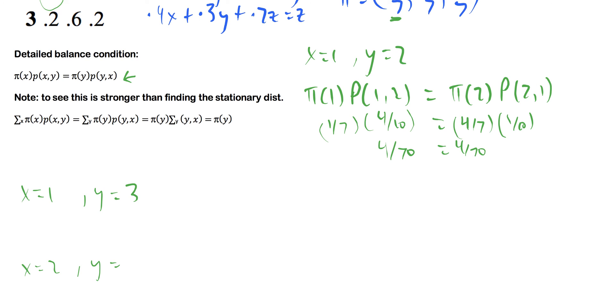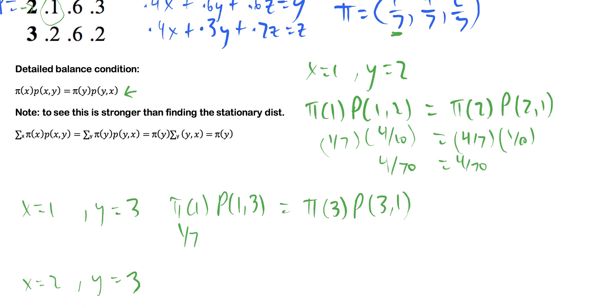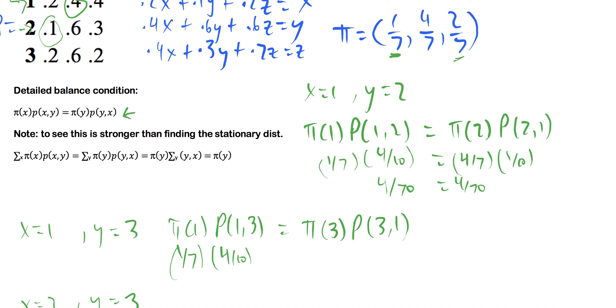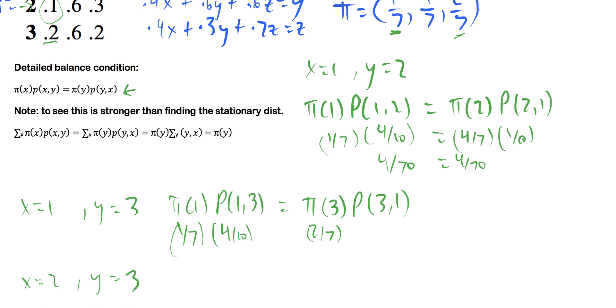So for when x is one, we want π of one times p of one to three equals π of three and the probability getting from three back to one. So we know this π of one already is one seventh. We can double check our transition matrix up here. And to get from one to three, it's four tenths. And now we have two sevenths up here for π of three. And to get from three to one, you can see here that it's two tenths. So this also equals 4/70ths. So this one checks out as well. So we'll give these some ticks because they both check out. Now let's check this last case here.